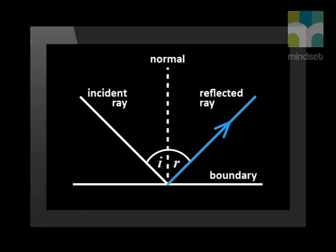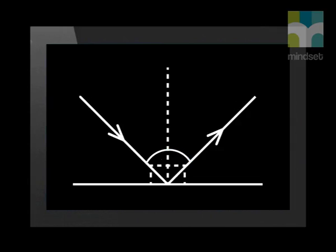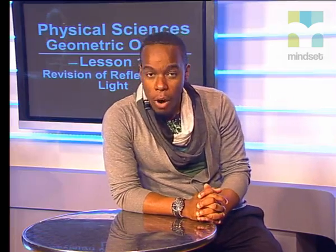The reflected ray is the ray that bounces off the surface. The angle of reflection is the angle between the reflected ray and the normal. The law of reflection states that the angle of incidence is equal to the angle of reflection. Notice that the two angles are equal.